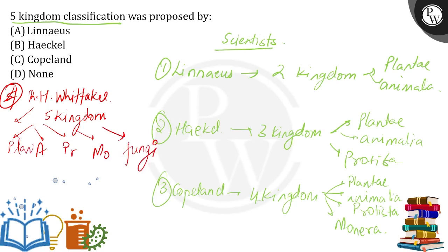So to summarize: Animalia, Protista, Monera, and Fungi. Since R.H. Whittaker is not among the options, that means none of the above applies — Linnaeus proposed two kingdoms, Haeckel three, and Copeland four kingdom classification. So the correct answer would be option D — none of the above.